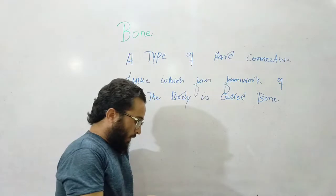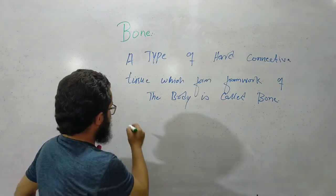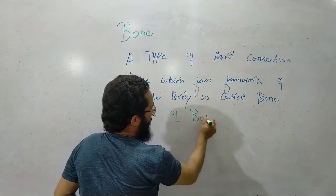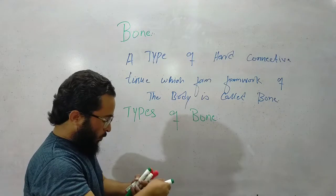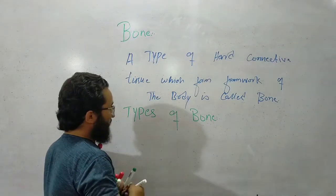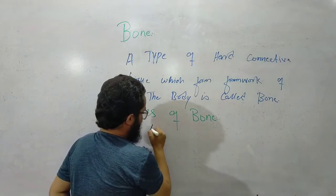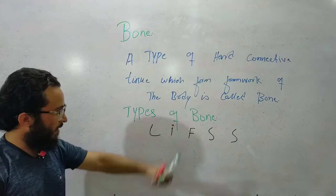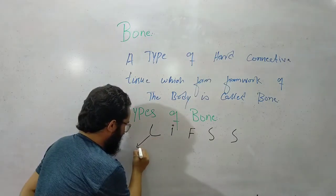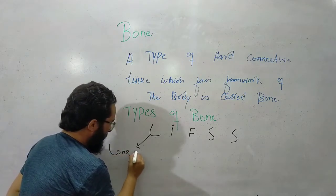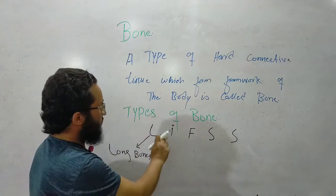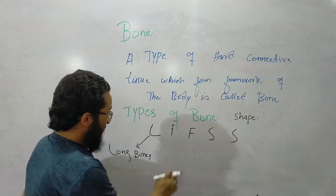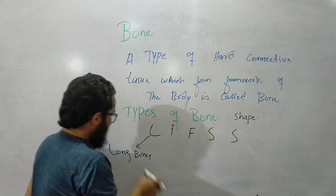Now the bone types. There are five types. These five types are based on shape. So the five types are L-I-F-S-S. L is for long bones. This is a type of bone mostly based on shape. The types are based on shape, so the five types are long bone, irregular, flat, short, and sesamoid.